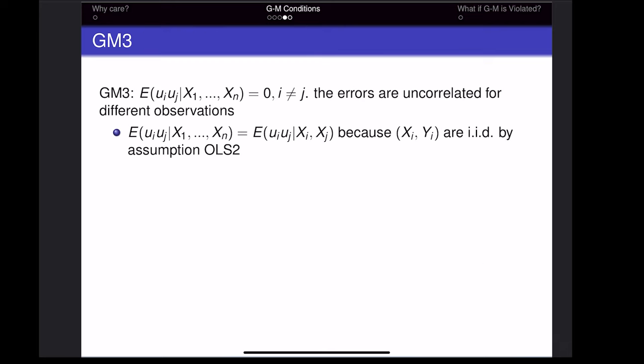The last Gauss-Markov condition states that error terms are uncorrelated for different observations. Consider the notation E[ui × uj]: if error terms are positively correlated, we expect a positive number; if negatively correlated, a negative number; and if unrelated, zero. The condition i ≠ j means we are comparing the error for observation i to any of the other observations' error terms.